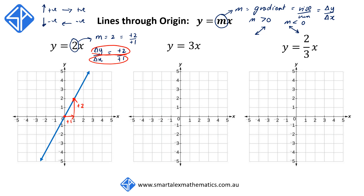Our second example, y is equal to 3x. We know that the line goes through the origin — that's our first point. We then use the information that m, the gradient, is equal to positive 3, which can be written as plus 3 over plus 1, so Δy over Δx equals plus 3 over plus 1.